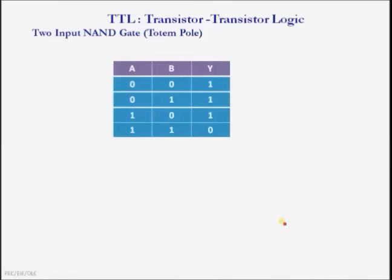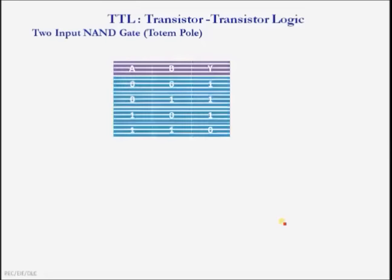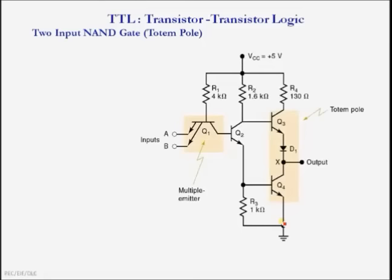Here we are going to see the operation of a 2-input NAND gate with totem pole output structure. A NAND gate provides high output when any one of the inputs is low, and provides low output when both inputs are high. Logic 0 is represented by ground potential at 0 voltage and logic 1 is represented by plus 5 volts. This is the basic structure of a 2-input NAND gate with totem pole output structure.